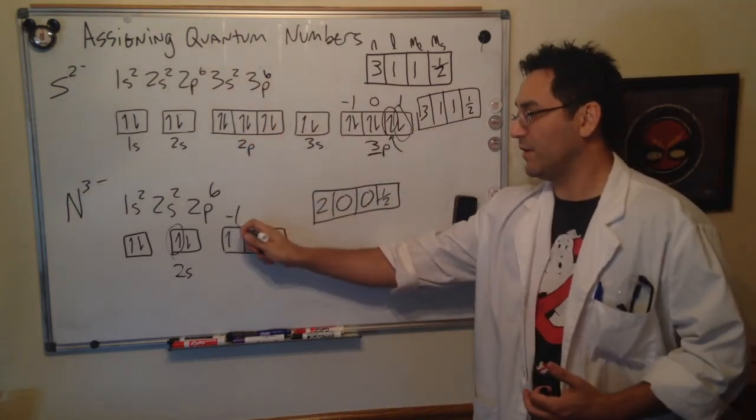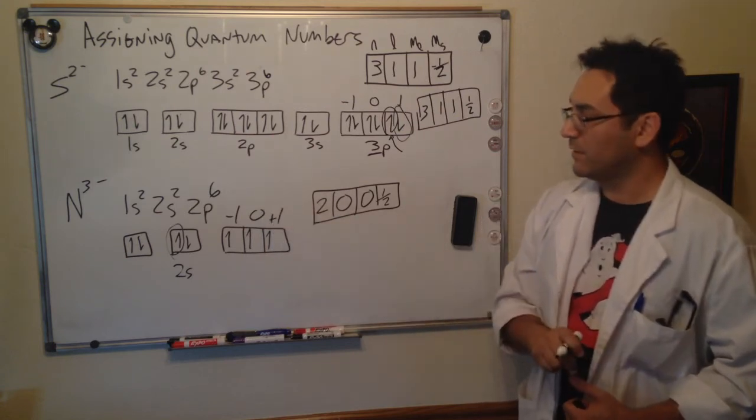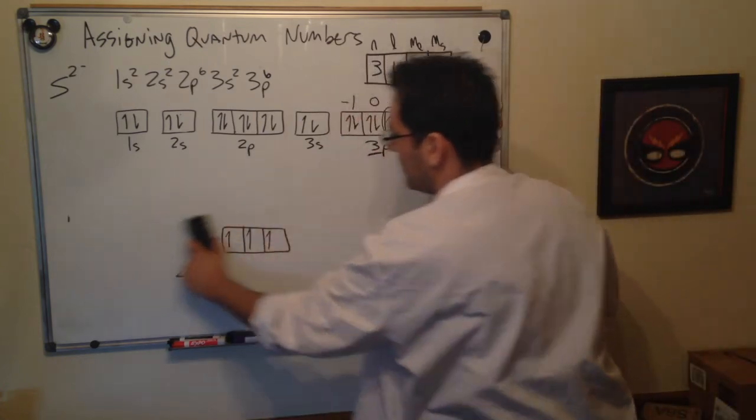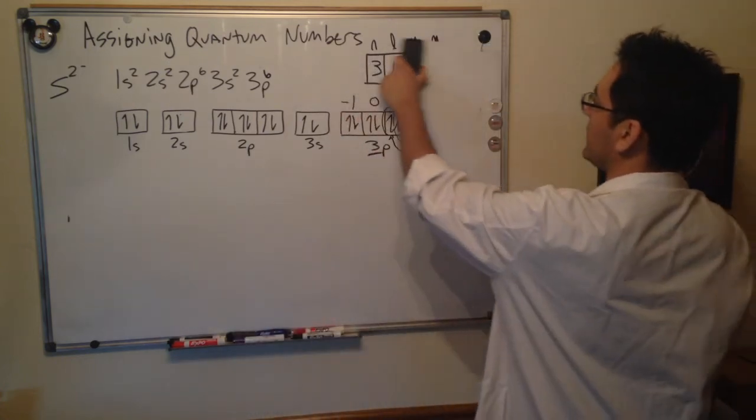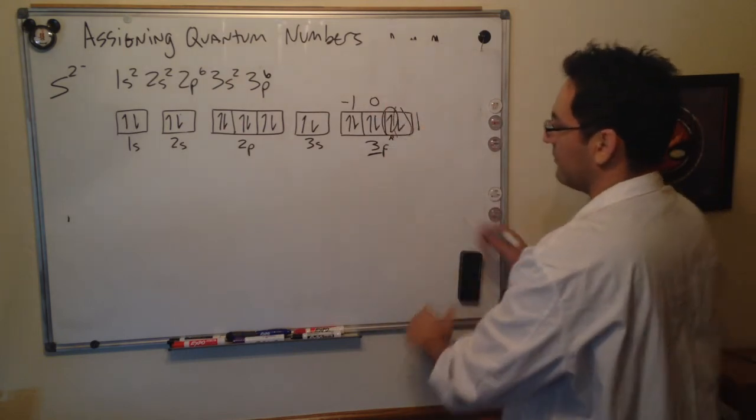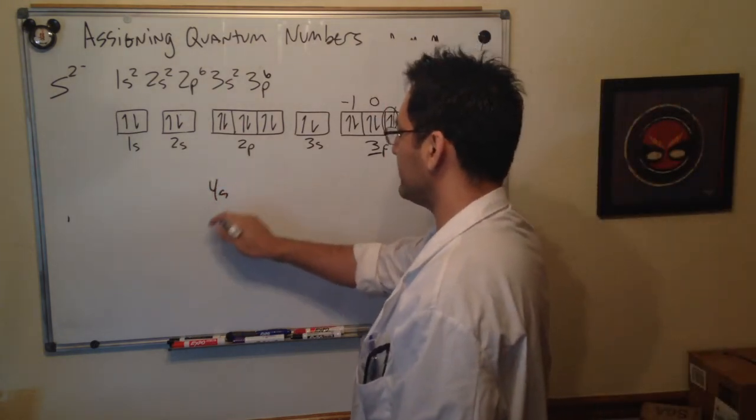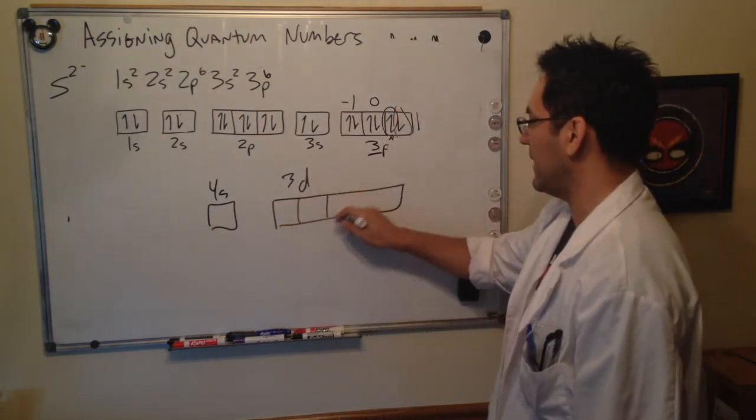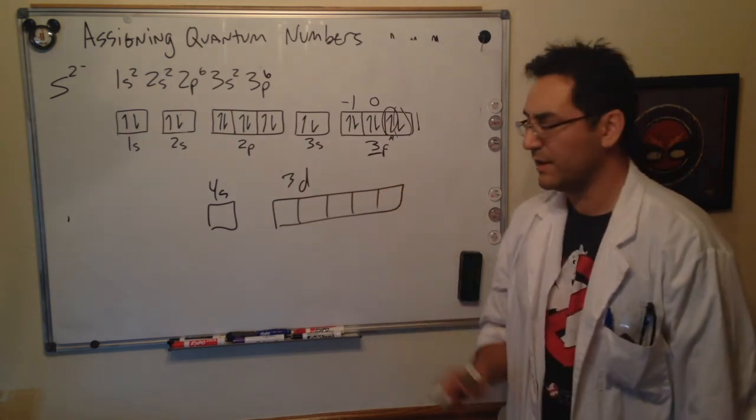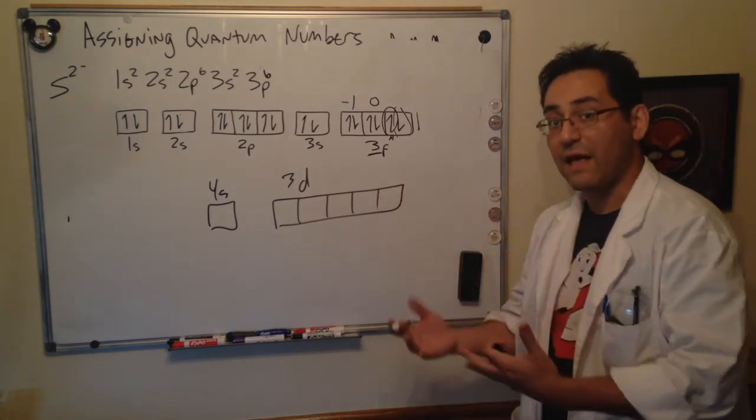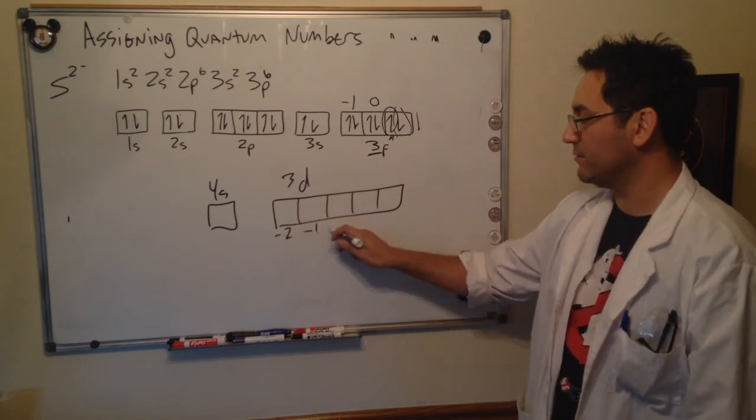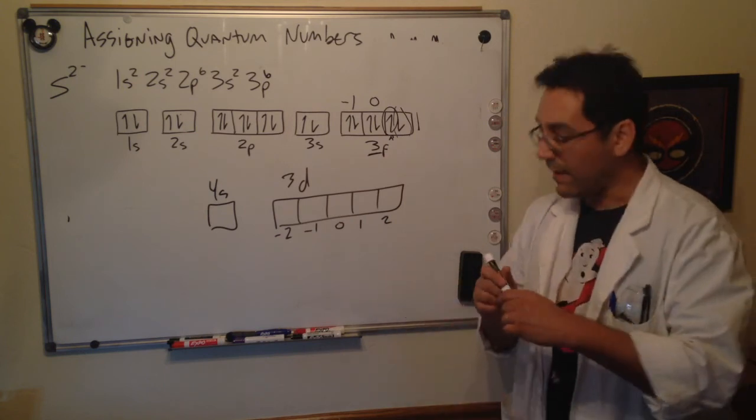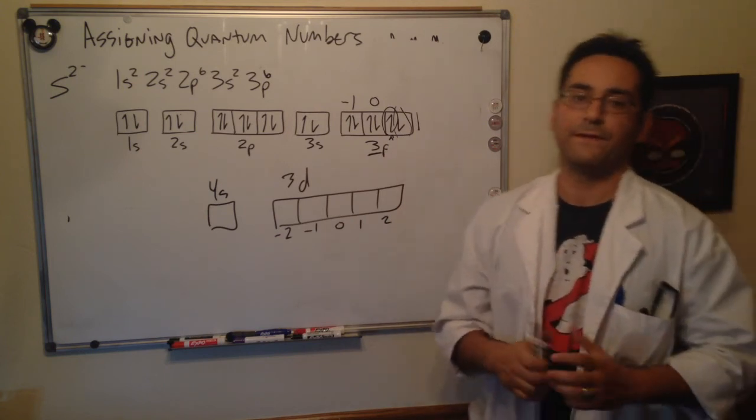Should I show you a d shell? Let me show you a d shell very quickly. Imagine that we built on this shell here. The 3p moves on to the 4s and that moves on to the 3d. The d is going to have five positions, and if you were trying to assign the ml number we would say minus two, minus one, zero, one, and two. So you could get ml by using orbital diagrams.